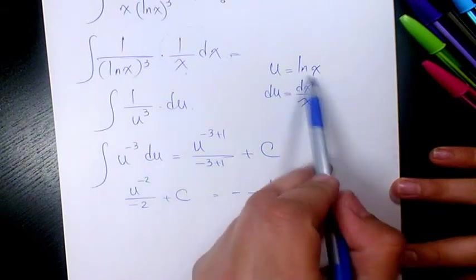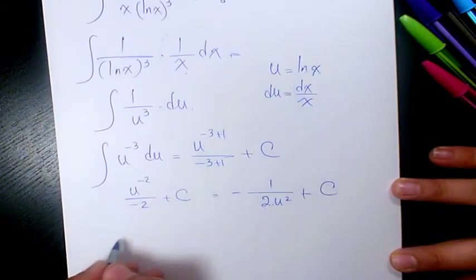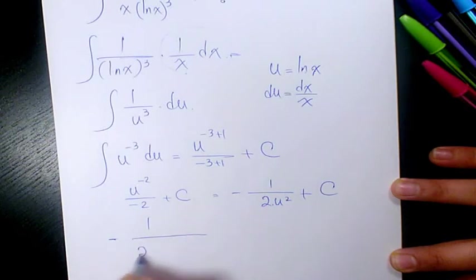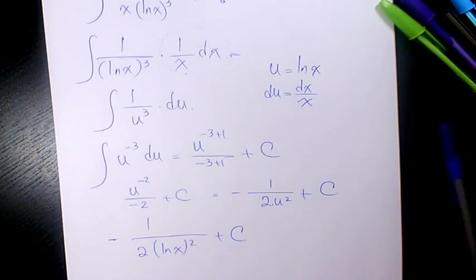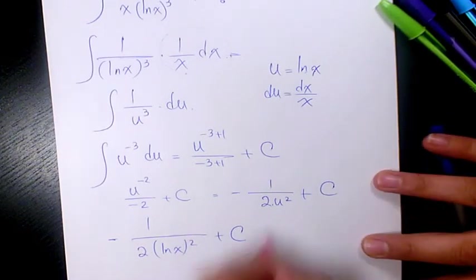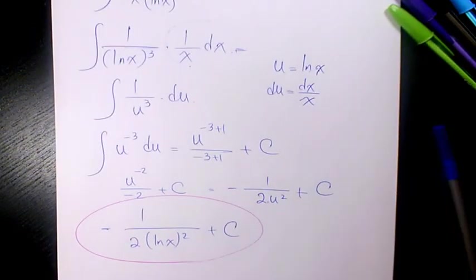Since u was ln(x), we substitute back to get negative 1 over 2 ln(x) to the power of 2 plus a constant. That's the final answer. I hope you enjoyed this video — please leave a comment if you have any questions and I'll get back to you as soon as possible. Thank you for watching and have a great day.